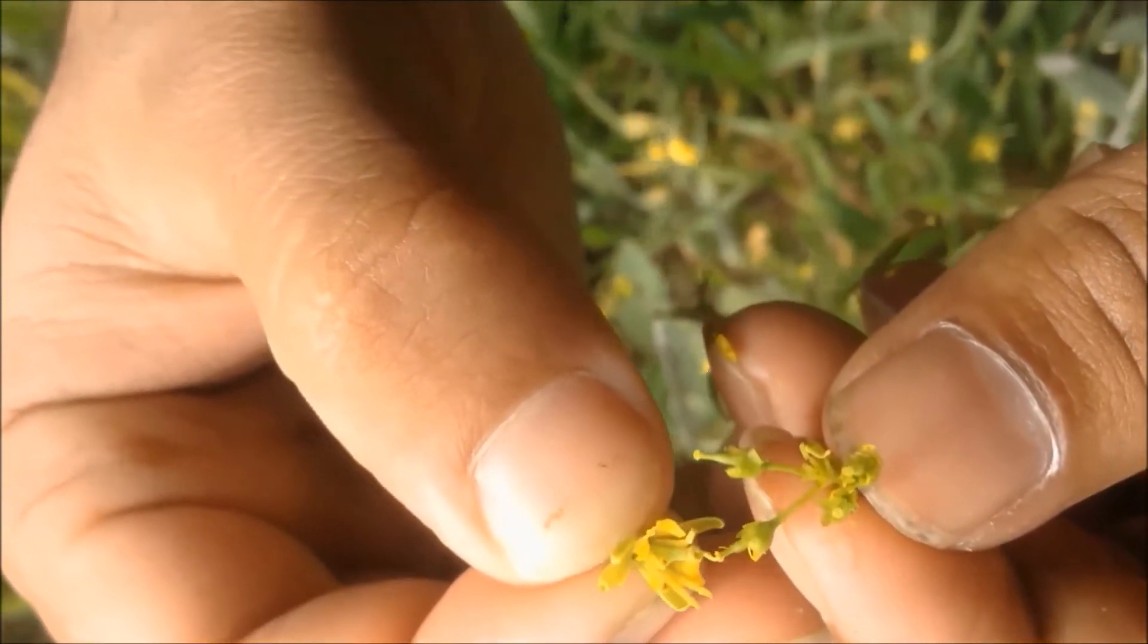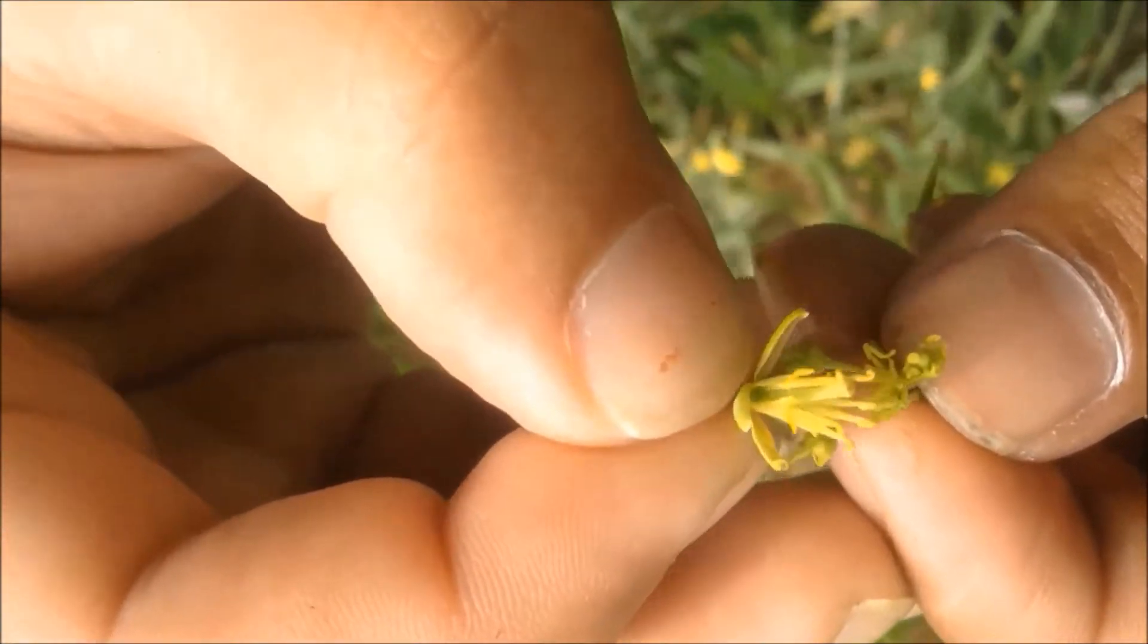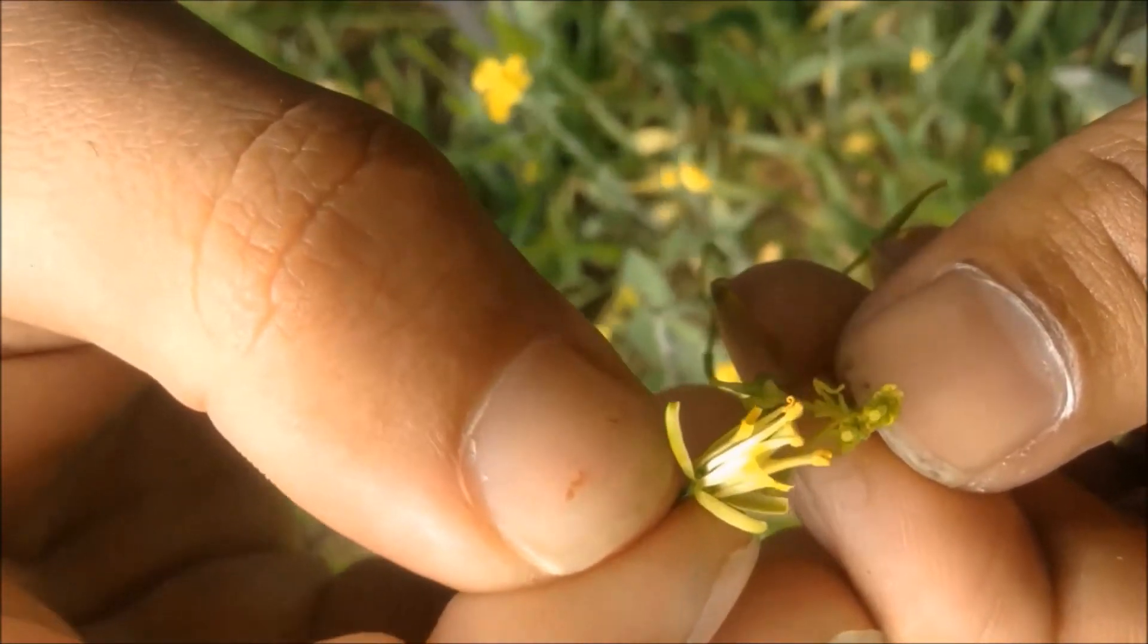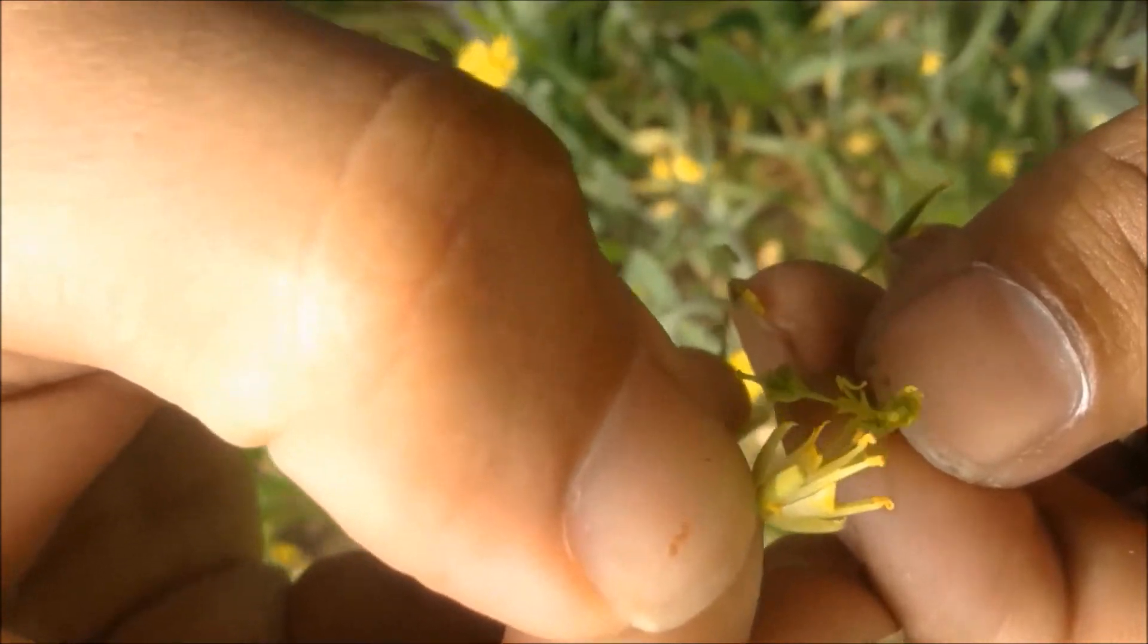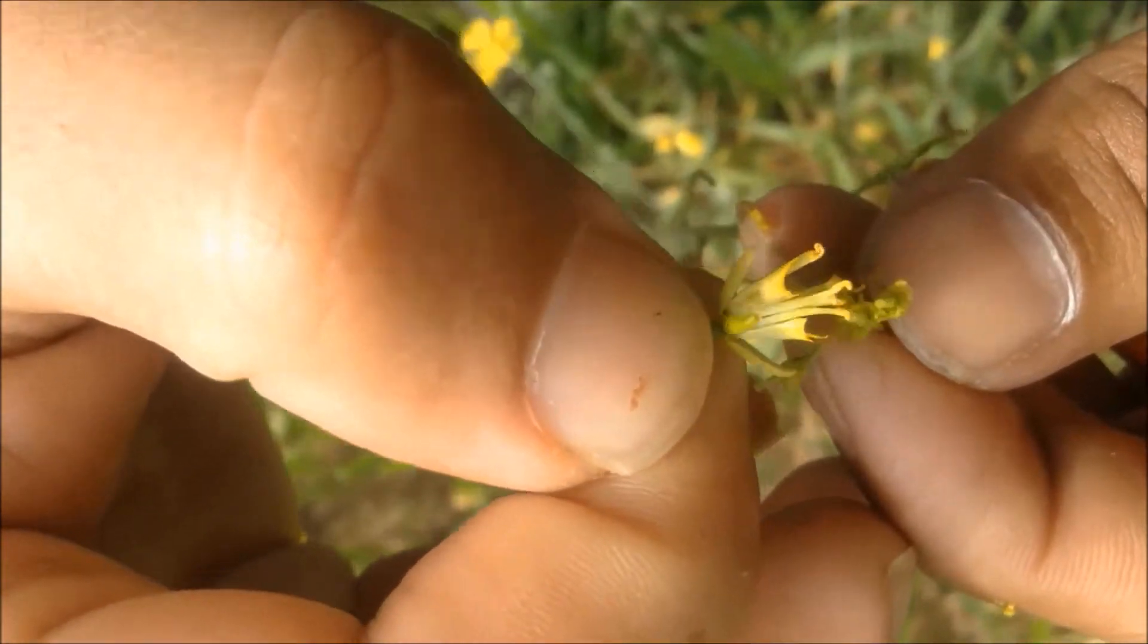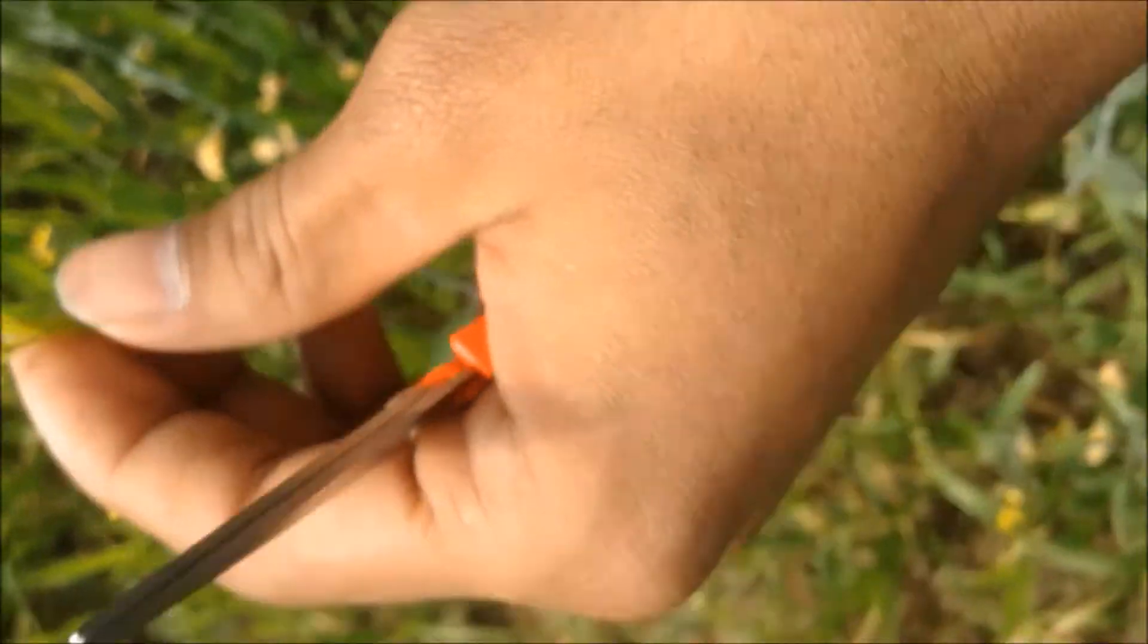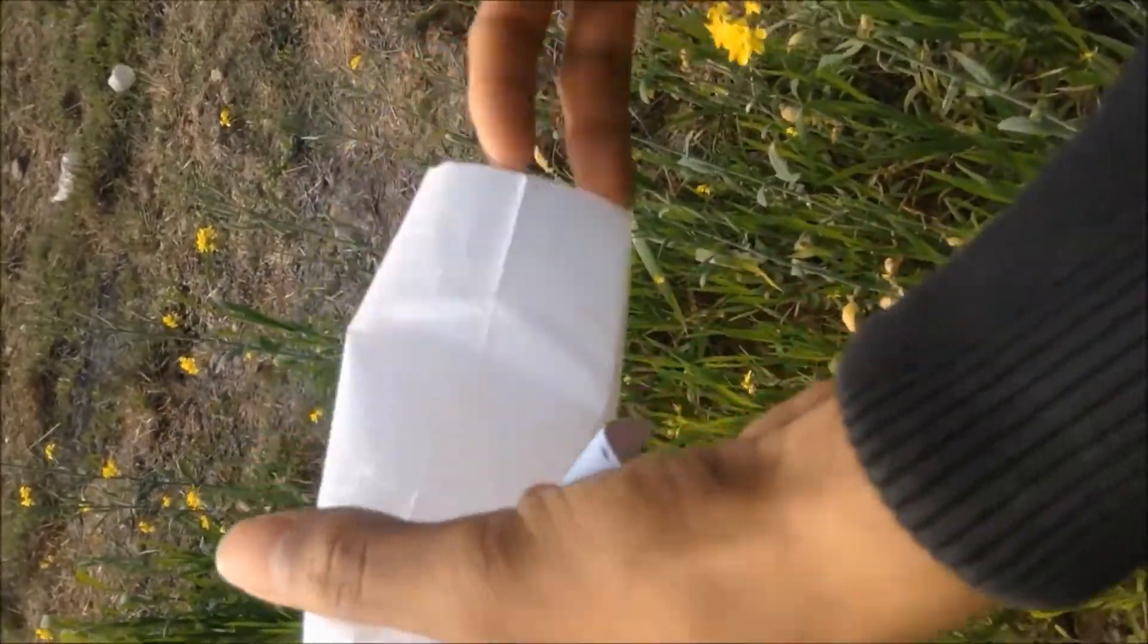Then now I slowly rub the pollen to the tip of each stigma. Now we see the tip of each stigma rough and yellowish than before. This confirms that the pollination has been done in the mustard.